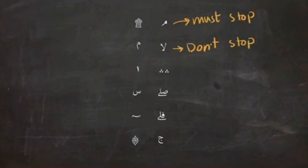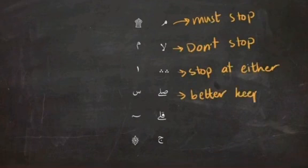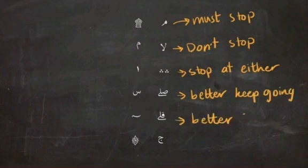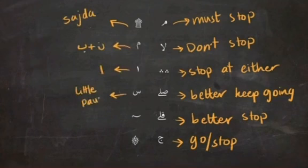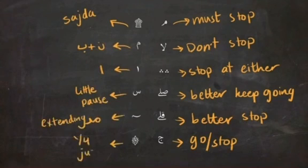So these were the 12 signs that you are going to see in the Quran. And here I'm going to give a quick summary of what these signs mean. Try to remember them, and of course, the best way to learn them is by reading a lot of Quran, because practice makes perfect.